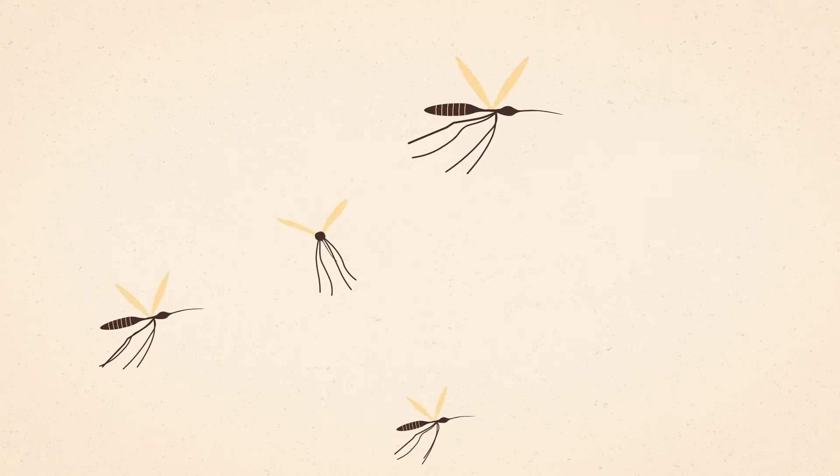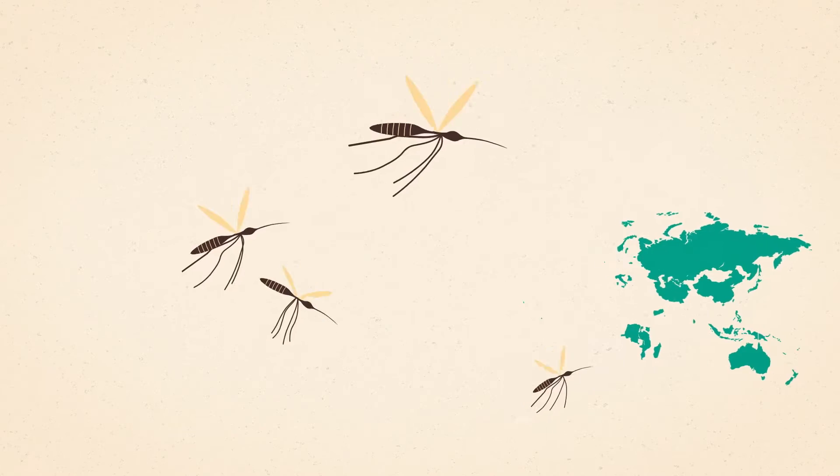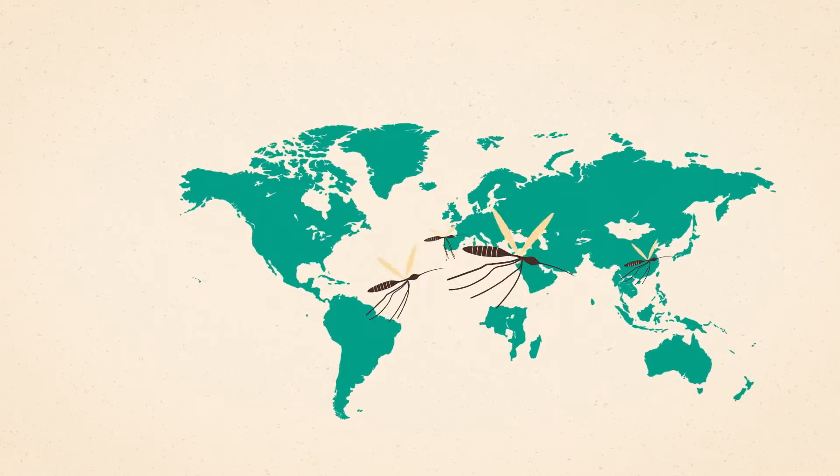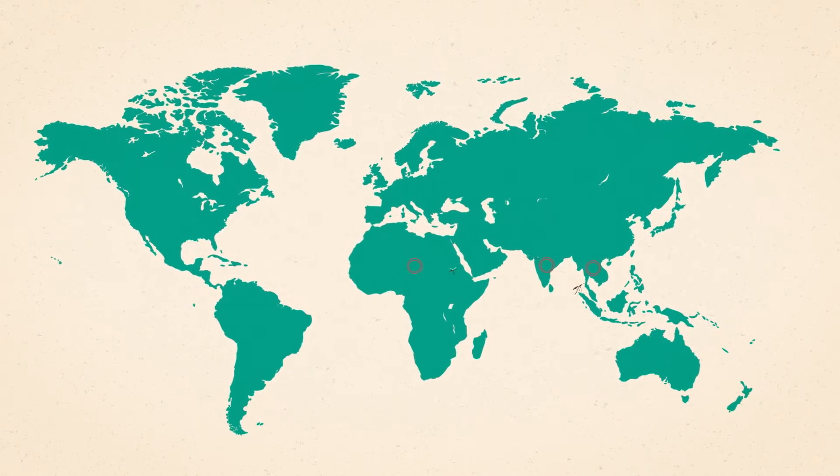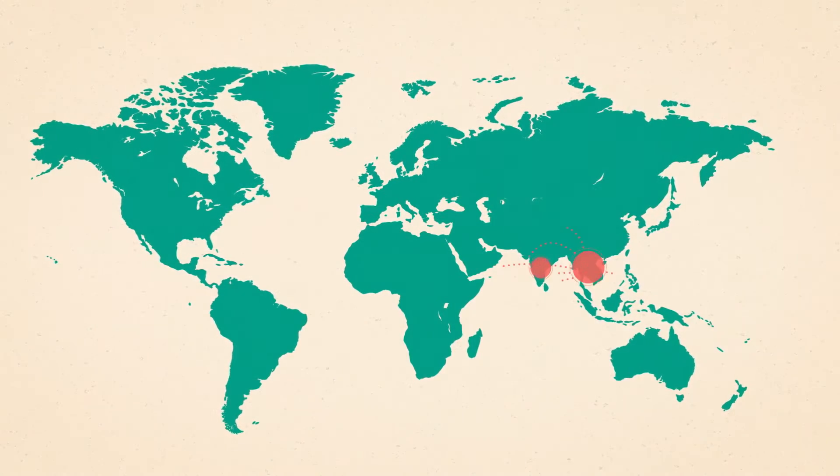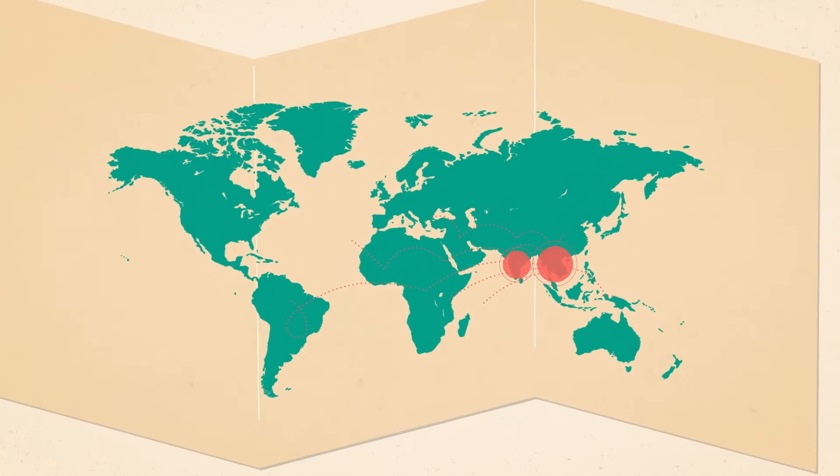Dengue fever is a disease which is transmitted by the bite of an infected mosquito. The vast majority of cases are found in the Asia-Pacific region, and it is one of the fastest-growing infectious diseases in the world.